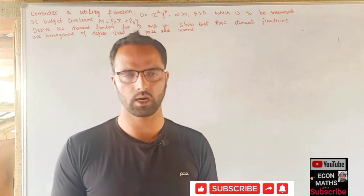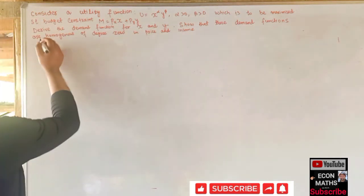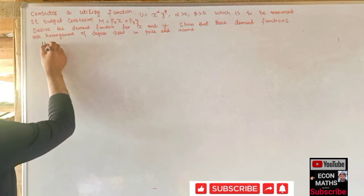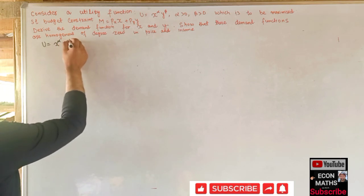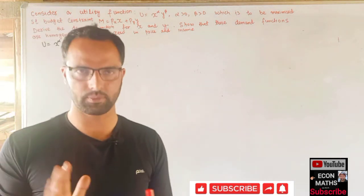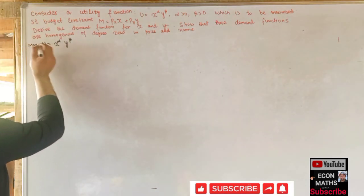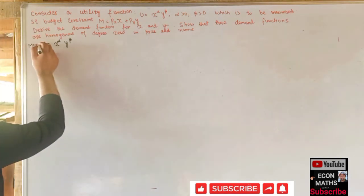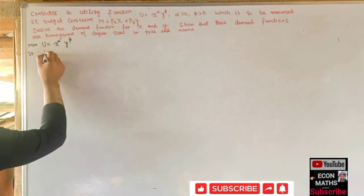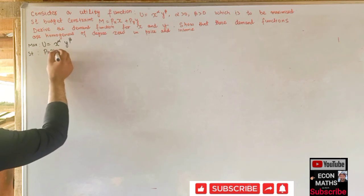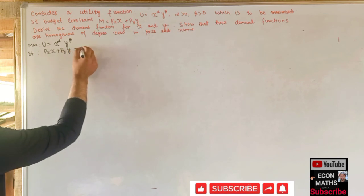We also have to show that these demand functions are homogeneous of degree zero in price and income. So we are given the utility function U = x^α * y^β, which is to be maximized subject to the budget constraint: Px*x + Py*y = M.